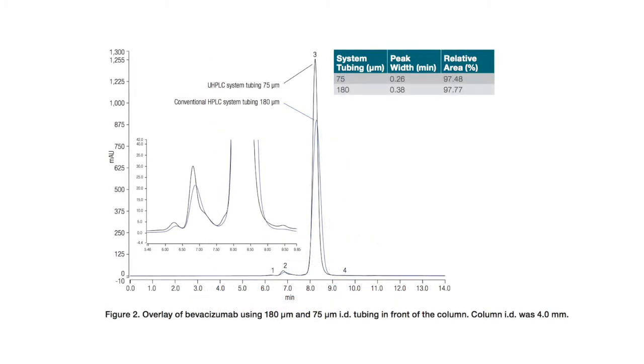However, the use of small 75 µm internal diameter transfer tubing and low sample volumes of 1 µL on a low dispersion UHPLC system eliminated peak dispersion, resulting in excellent chromatography. Furthermore, the effect of solvent addition in the mobile phase was evaluated and found not to improve peak shape, confirming the absence of secondary hydrophobic interactions with the MABPAC SEC-1 column.